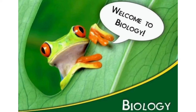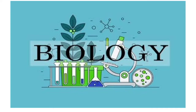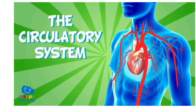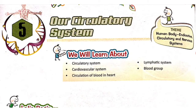Hello everyone, welcome to online class of biology. This is Pragati Pandey and today we are going to discuss the topic of biology that is the circulatory system — the heart, veins and arteries. The name of the chapter is 'Our Circulatory System,' which means it will discuss the circulatory system of humans. There are many animals like fishes, birds, humans, and other mammals, but we will focus on human beings.